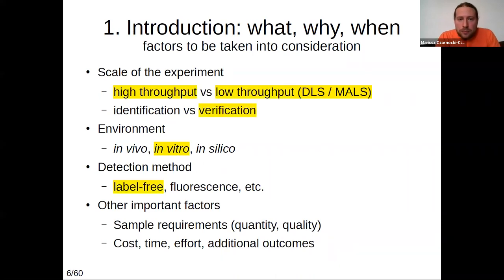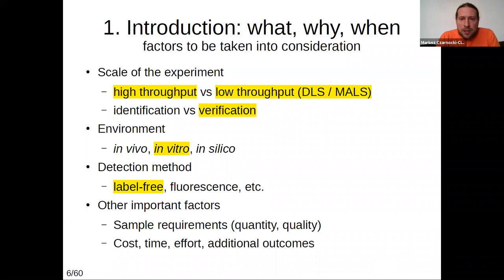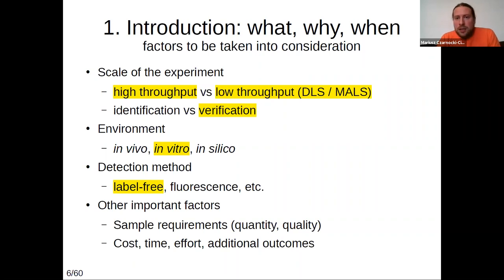When it comes to light scattering methods, most of them are rather low throughput. Multi-angle light scattering coupled to size exclusion chromatography takes about one hour per experiment, so if you want to test 10 or 20 interaction partners you can do it in one or two days, but screening a whole library is probably not possible. Dynamic light scattering can be parallelized in multi-well plates so it can work in a higher-throughput mode, but also in a single cuvette. I would call these methods verification methods rather than identification methods, though DLS can also be used for identifying new interacting partners. Both methods are label-free — you don't need to modify your proteins.